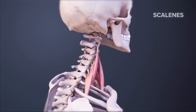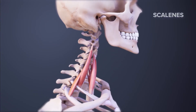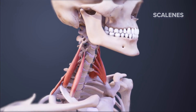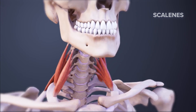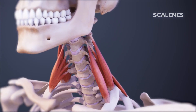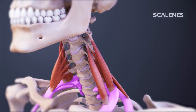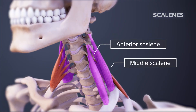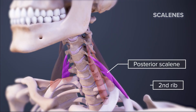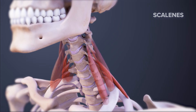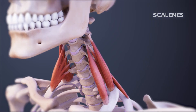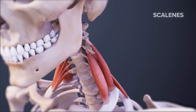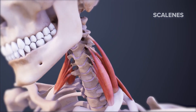The scalene muscles are three pairs of lateral neck muscles that connect the mid and lower cervical spine with the top of the rib cage. The anterior and middle scalenes attach to the first rib, while the posterior scalene attaches to the second rib. The scalene muscles help with neck flexion and side bending.